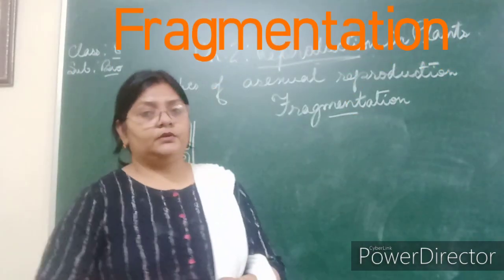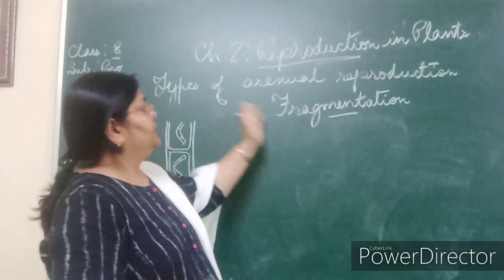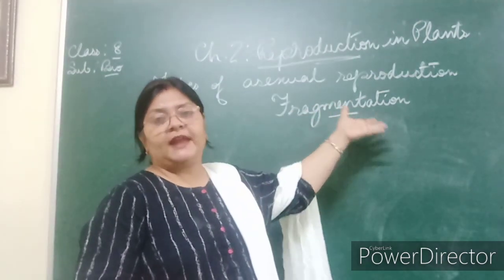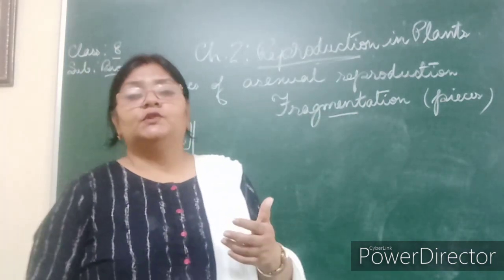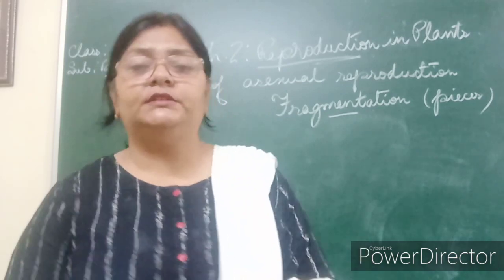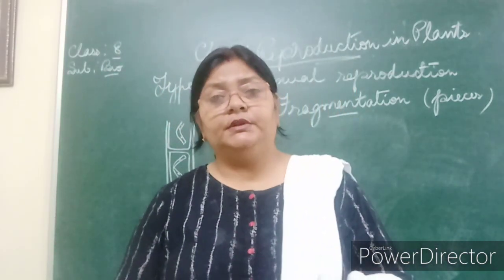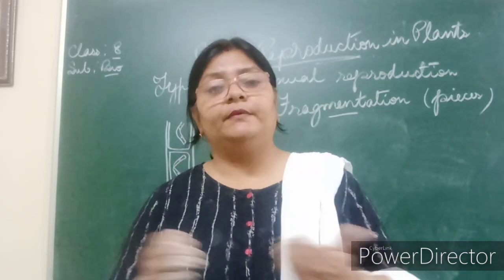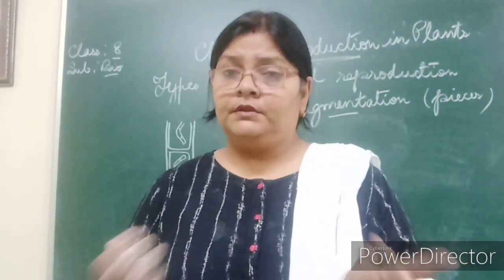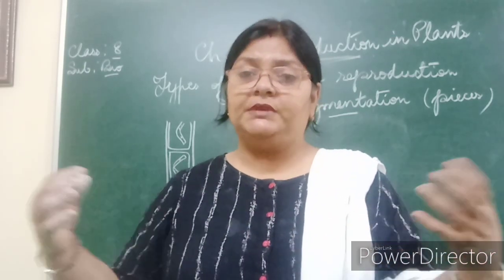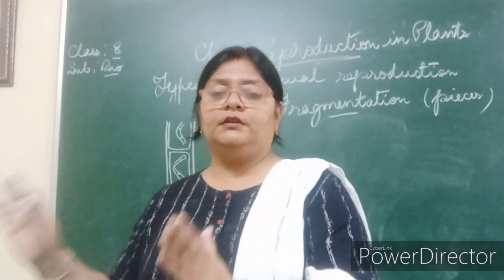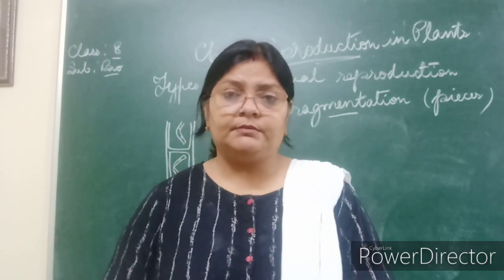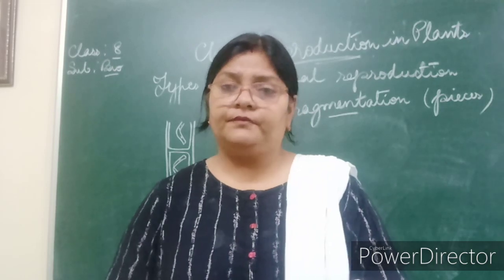The third type of asexual reproduction is fragmentation. 'Fragments' means pieces — small pieces. Some lower organisms have the capability of producing new individuals from the fragments or pieces of the organism. The parent cell might break into pieces due to various reasons, and those pieces have the capability to grow and become a new individual. This process by which reproduction occurs is called fragmentation.